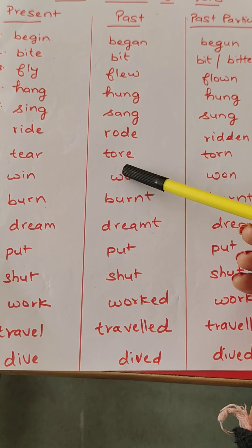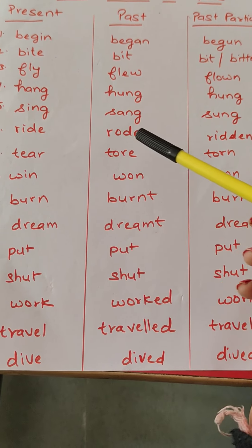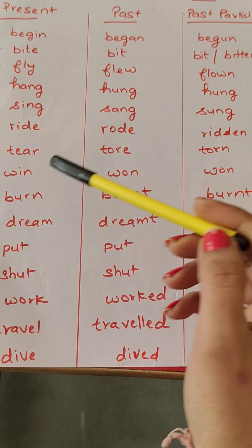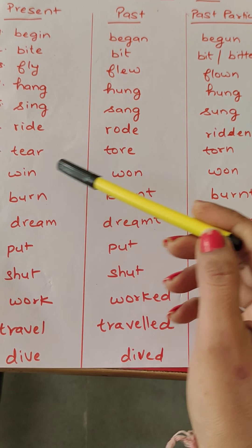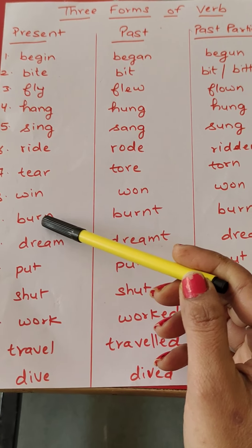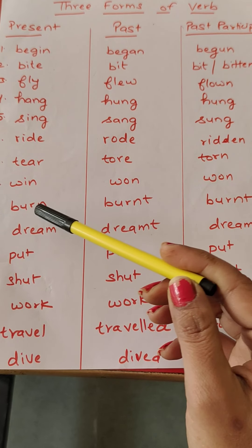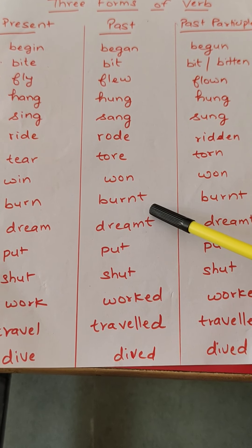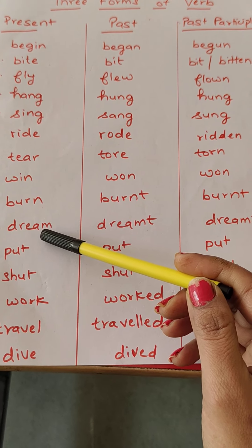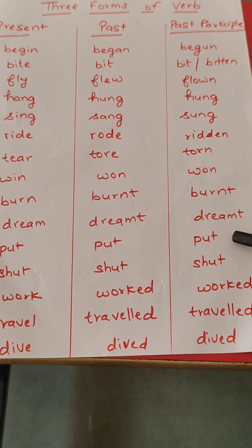Tear, tore, torn. Win, won, won. Burn — burn mein 't' add ho gya, toh ban gya burnt. Isi tarah dream mein 't' add ho gya, toh ban gya dreamt.